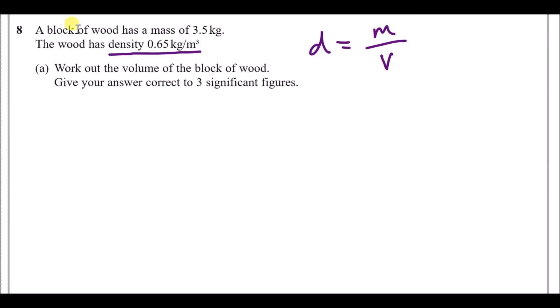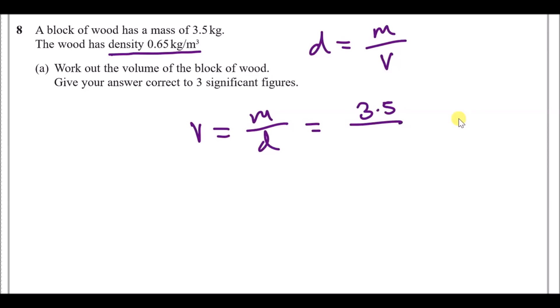Part a: find the volume of the block of wood. Make v the subject by swapping v and d, giving v equals mass over density. The mass is 3.5 kg and the density is 0.65, so 3.5 divided by 0.65, rounded to three significant figures, gives approximately 5.38 metres cubed.